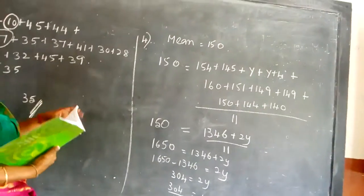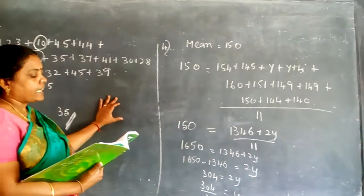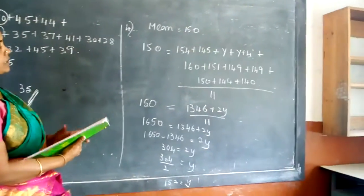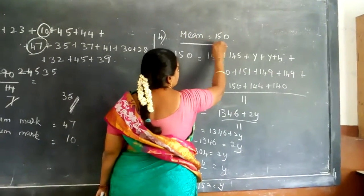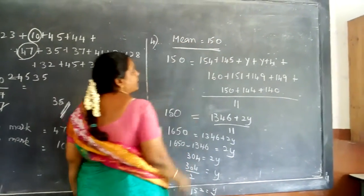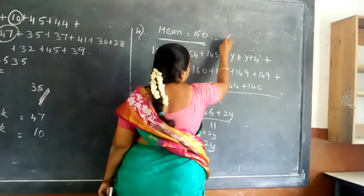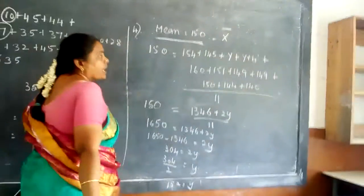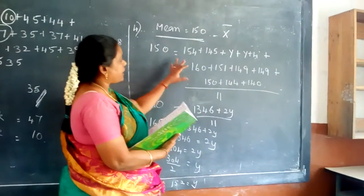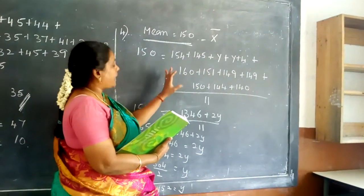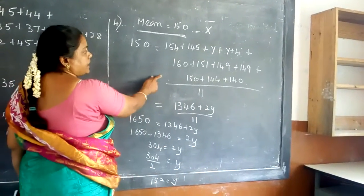Now let me teach you the fourth question. The mean height of 11 students in a group is 150 centimeters, so the mean X̄ is given here. There are 11 students in the group and their heights have been given.